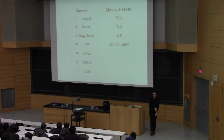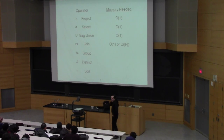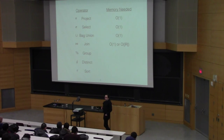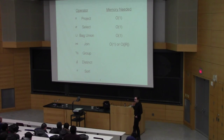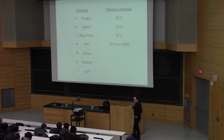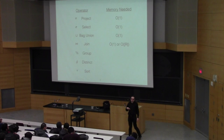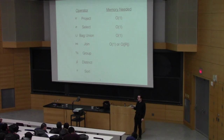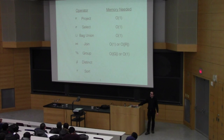What about grouping? It's order N, where N is the number of groups — in the worst case it's the number of input rows, but better described as the number of groups. Distinct? Same deal — number of distinct values.